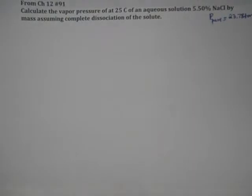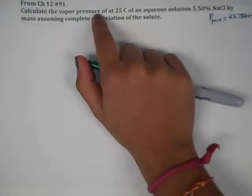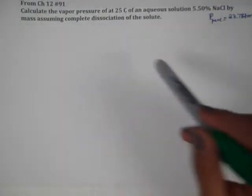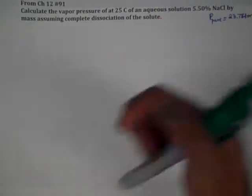The last problem for chapter 12 is number 91 and it also deals with a colligative property. This time we're doing vapor pressure again and we're dealing with the vapor pressure at 25 degrees Celsius of a solution, an aqueous solution, meaning it's in water, of 5.5% NaCl by mass.